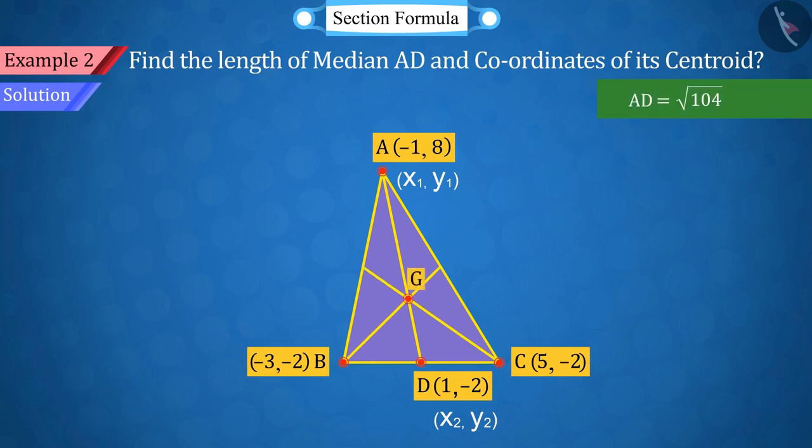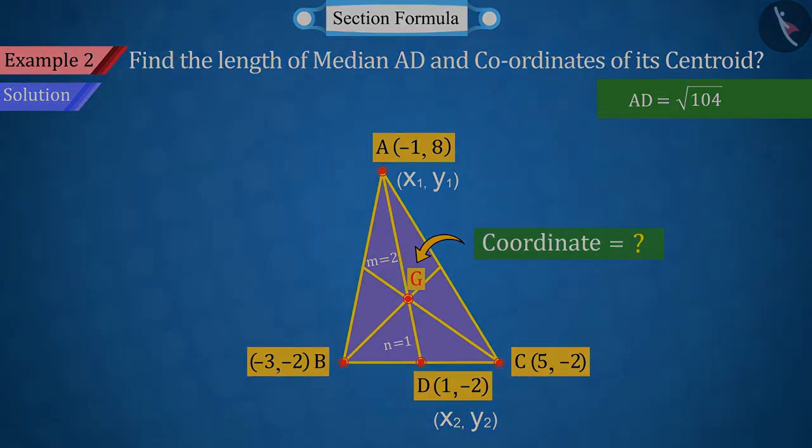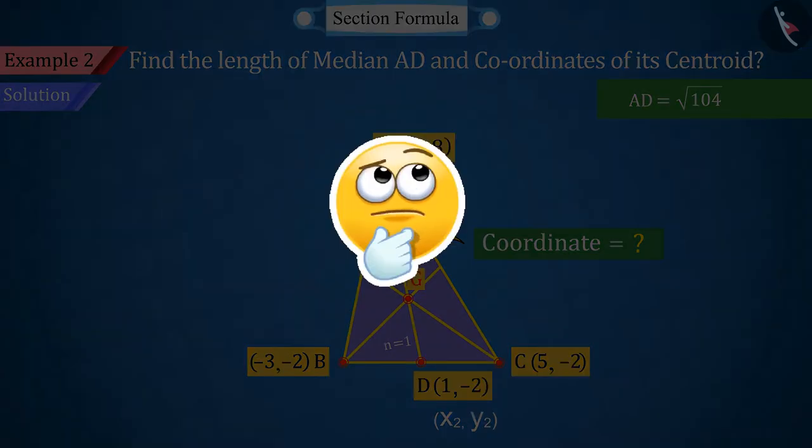Let the point G be triangle ABC's centroid. Because from triangle ABC's three vertices, the medians that pass intersect at point G, which divides the median AD in the ratio 2 is to 1. Hence, the point G is located on the median AD. Since now we have to find the coordinates of centroid G, try to recall and tell how did we solve this type of situation in the previous video.